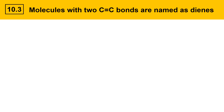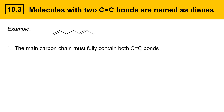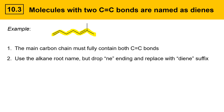Molecules that have two C=C double bonds are named as dienes. With this kind of molecule the main chain has to be identified and must fully contain both C=C double bonds. In this case the appropriate longest carbon chain is identified as shown here with the highlighted atoms. Use the alkane root name but drop the -ne ending and replace it with the suffix -diene. This molecule contains two C=C double bonds and has seven carbons total in its longest chain, so if it were an alkane it'd be named heptane. We drop the -ne ending and replace it with -diene to get heptadiene — that's the root name.